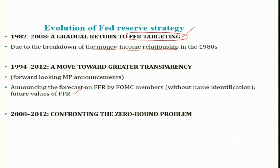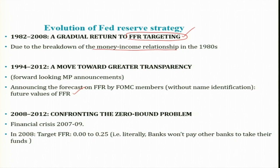In 2008 to 2012, the Fed confronted the zero bound problem. At the beginning of the 2007–09 financial crisis, the Federal Reserve was conducting policy under a Fed funds rate strategy. By the summer of 2008, in an effort to reverse the economic downturn, the central bank had reduced the Fed funds rate essentially to zero — between 0 and 0.025 percent — meaning the short-term interest rate was at the bottom; literally, banks would not pay other banks to take their funds. Zero is the effective lower bound for the Federal funds rate or any other nominal interest rate.